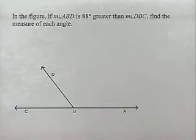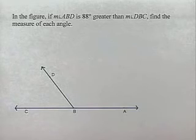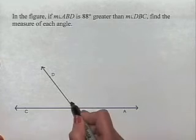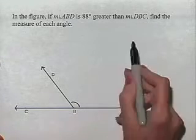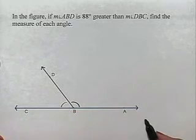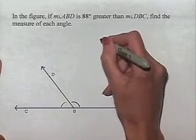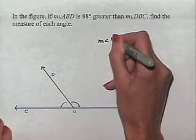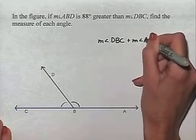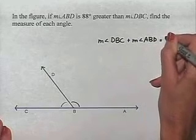Here's another problem dealing with angle measure. In the figure, if the measure of angle ABD is 88 degrees greater than the measure of angle DBC, find the measure of each angle. Let's make sure we see where those angles are located. ABD would be this angle, DBC is the angle right next to it, and notice that the two angles are adjacent to each other and form a straight angle. So therefore, we know that the measure of angle DBC plus the measure of angle ABD is going to equal 180 degrees.